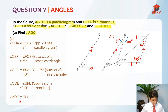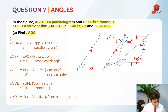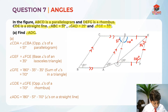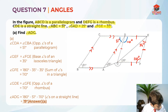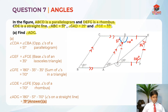Now in order to find angle ADG, we just need to take 180 degrees — this straight line CDE — minus 51 degrees for angle CDA, minus 110 degrees for angle GDE. This gives us angle ADG, which is 19 degrees.